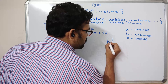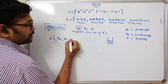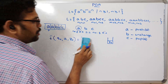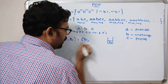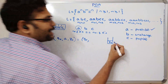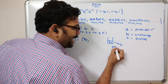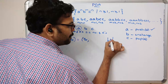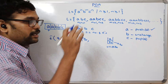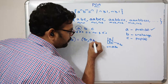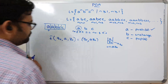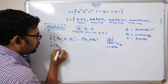As we discussed in the previous session, the initial stack symbol is Z0. So delta(q0, a, Z0) gives q0, and we apply the push operation — we remove Z0 and push 'aZ0'. So the stack now contains the string 'aZ0'.